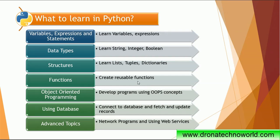There will be data types you need to understand — for example, string, integer, and boolean — which you can learn under the data types section. Structures are helpful because they are the components where data is stored during your Python program execution, and structures involve lists, tuples, and dictionaries. Functions allow you to create reusable code which can be used across multiple files. Creating complex data types and using object-oriented concepts comes under object-oriented programming for Python. You'll also learn how to connect to a database like Oracle or SQL Server, and how to fetch, update, or insert records. Advanced topics such as network programming and using web services are also covered.